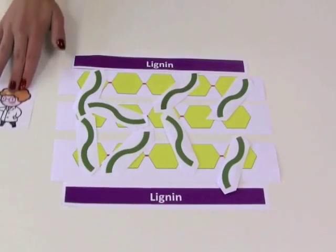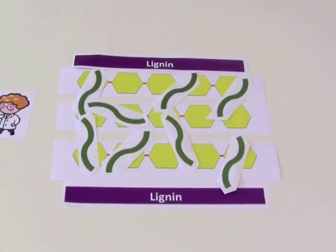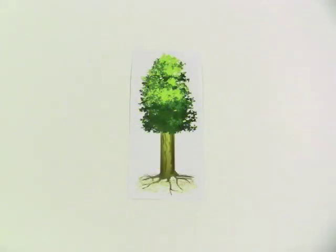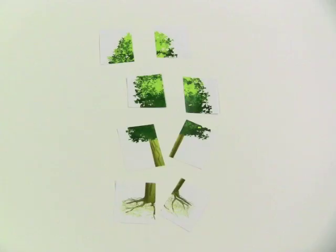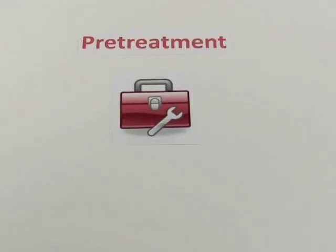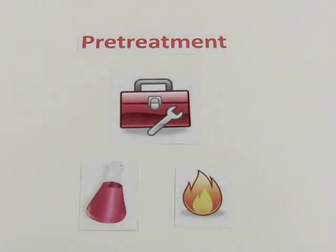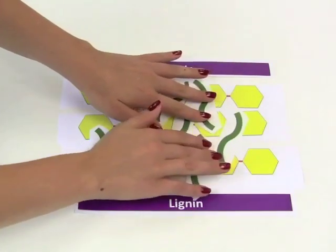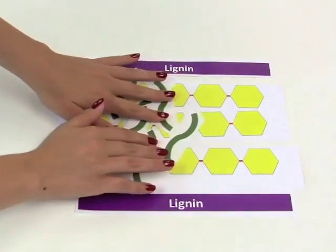So how do scientists solve this problem and turn this tangled mess of cellulose into ethanol? First, the plant material is chopped up into smaller pieces to be roughly the same size. Then, scientists must detangle the plant material in a process called pretreatment, using heat or chemicals. This exposes the plant's cell walls and loosens the cellulose from the lignins and the hemicelluloses.